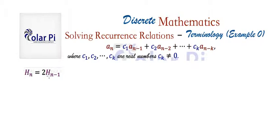This here is linear, it's homogeneous, and it's of degree one. So we'd say that this is a linear homogeneous recurrence relation of degree one.